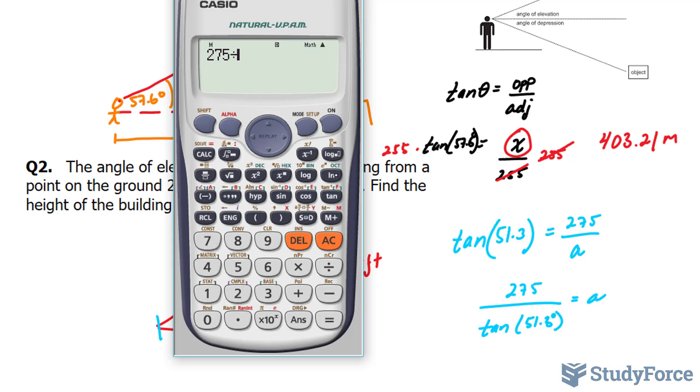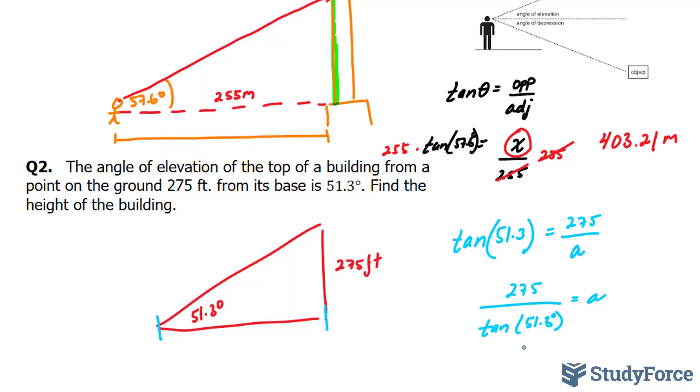275 divided by tangent 51.3 degrees. And we end up with 220.31. 220.31 is equal to a, and this is in feet.